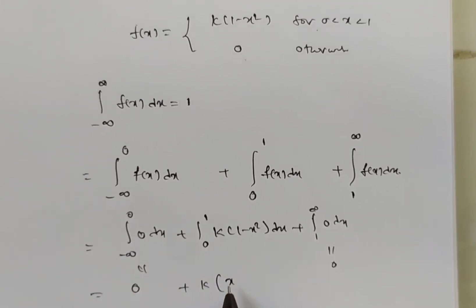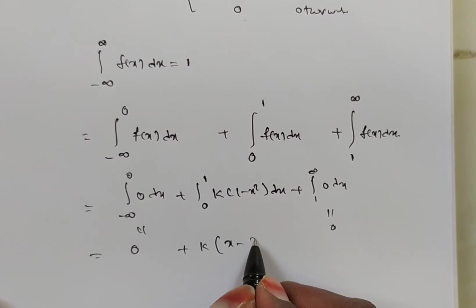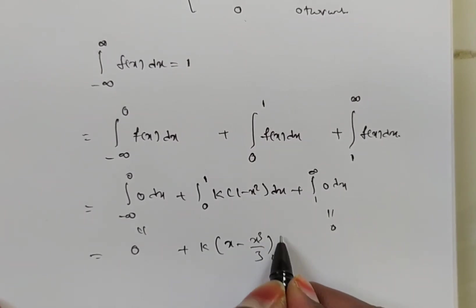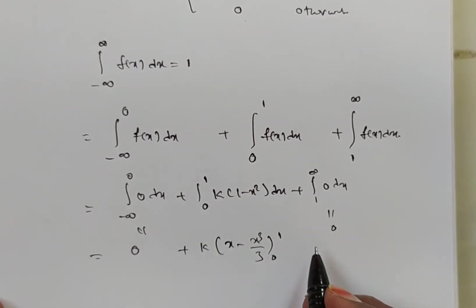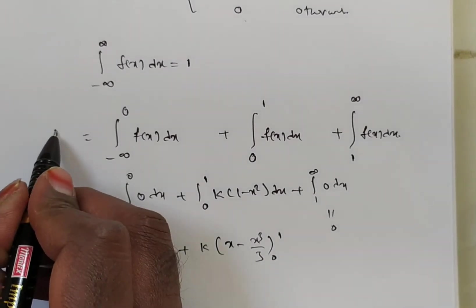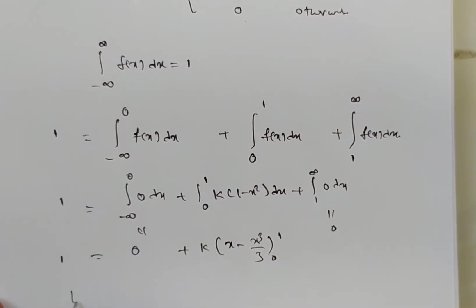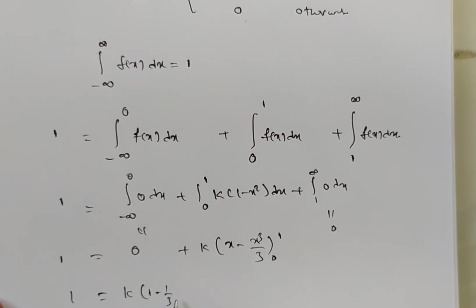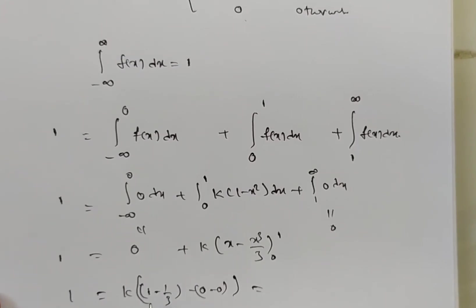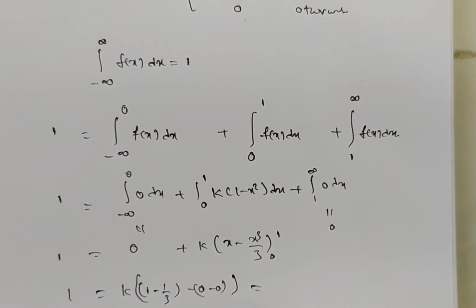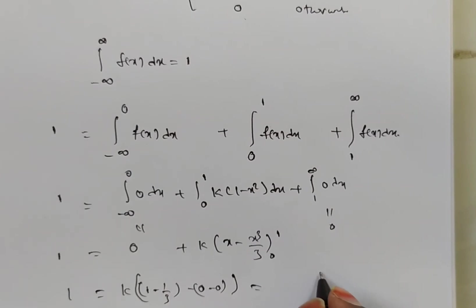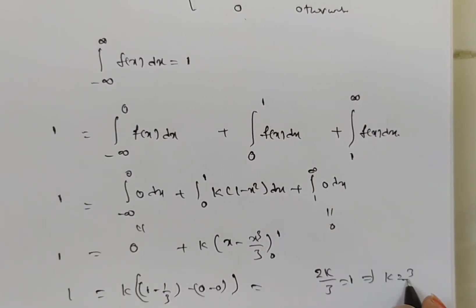Integrating: k times [x minus x³/3] evaluated from 0 to 1. Substituting limits: 1 equals k times (1 minus 1/3) minus (0 minus 0). This gives 1 equals k times 2/3, so 2k/3 equals 1, therefore k equals 3/2.